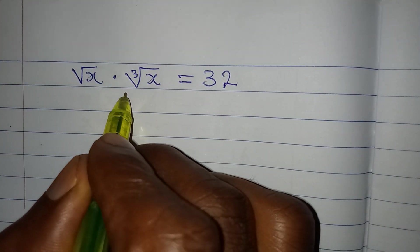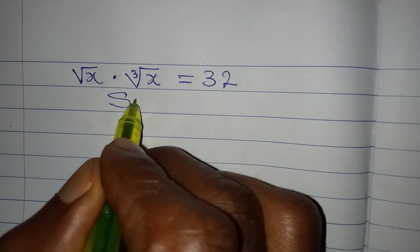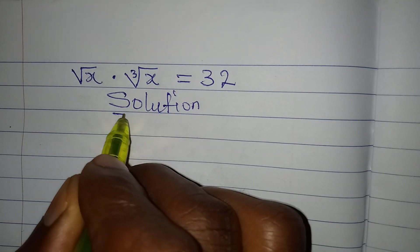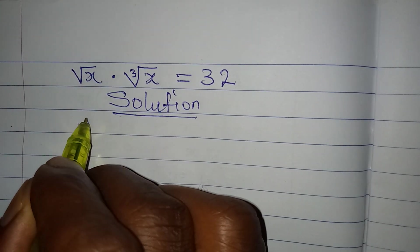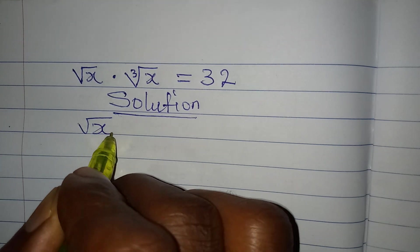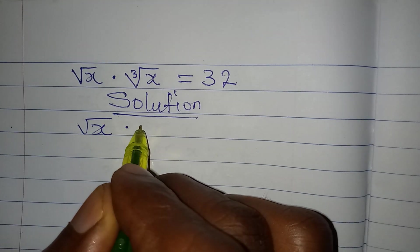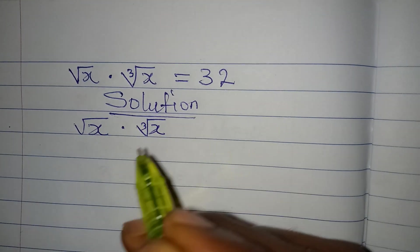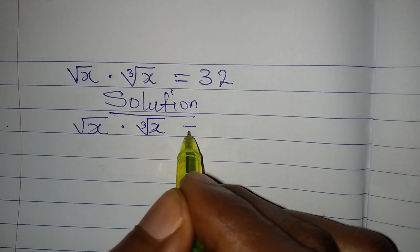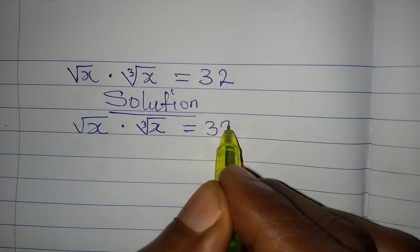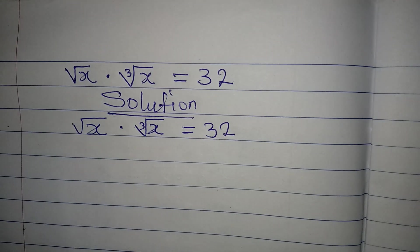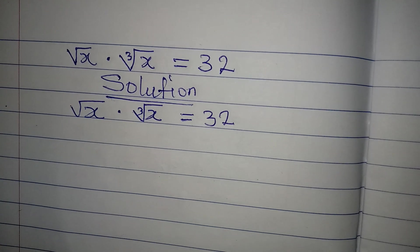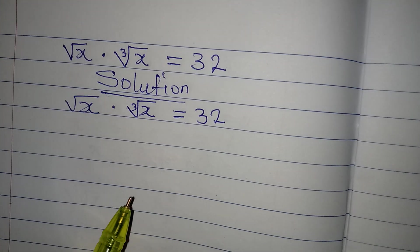Hello everyone, welcome to Few Cool Mathematics. This time we have to solve: the square root of x multiplied by the cube root of x equals 32. How do we solve this to get the value of x, and how many solutions will satisfy the given equation?